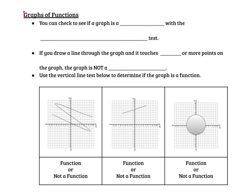You can also check to see if a graph is a function with what I'd mentioned before with a vertical line test. I think you're going to like this test. So here's how this works. If you draw a line through a graph and it touches two or more points on the graph, then the graph is not a function. It's a pretty simple, straightforward test. You just have to remember that it's called a vertical line test. So your line must be vertical.